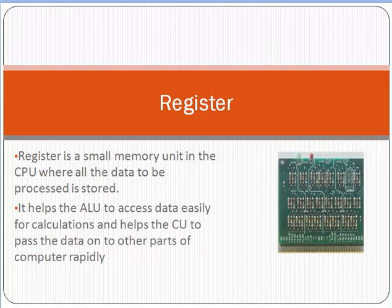Now the last section of CPU is the Register. What is a register? A register is basically a small unit of memory. If you open a CPU, you can see these sorts of units. This is called a register, which is responsible to hold a small memory unit in the CPU where all the data to be processed is stored. It helps the ALU to access data easily for calculations and helps the Control Unit to pass the data to other parts of the computer rapidly.